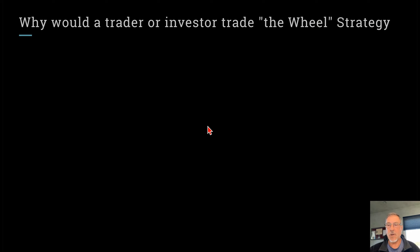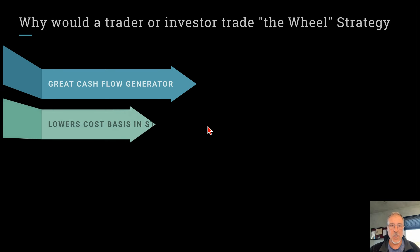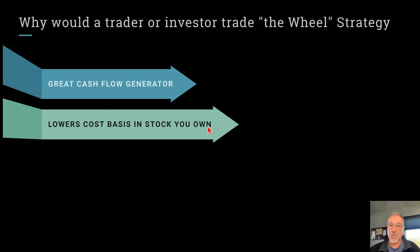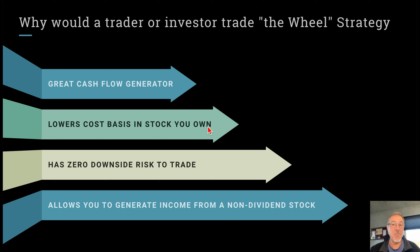Why would a trader or investor use the wheel strategy? First, it's a really great cash flow generator. Many people use this in a retirement account to generate additional income from stock they already own. And I want to stress this: there is zero downside risk in trading this strategy, particularly if you already own stock or intend to own stock in 100-share increments. The reason it has no downside risk is it actually lowers the cost basis in stock that you already own or are going to own.